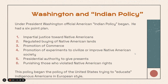Under President Washington, the official American Indian policy began with a six-point plan: (1) impartial justice towards Native Americans; (2) regulated buying of Native American lands; (3) the promotion of commerce between Native American tribes and the United States; (4) the promotion of experiments to civilize or improve Native American society; (5) the presidential authority to give presents to Native American tribes; and (6) punishing those who violated Native American rights. This policy began the general push to educate Indigenous Americans in the European style — note number four, trying to 'civilize' these Native Americans, even though they were already civilized, just not the same way.